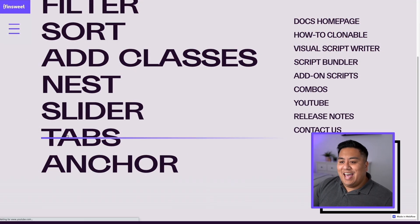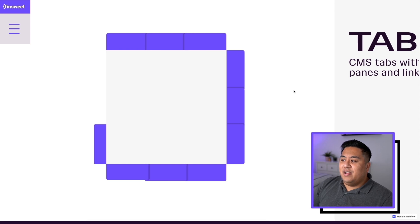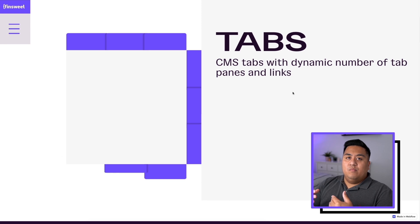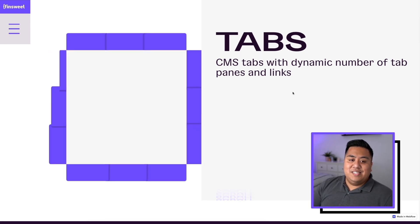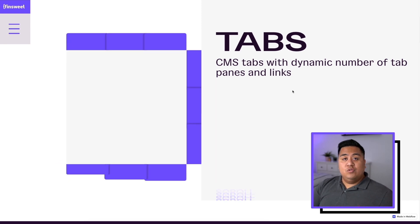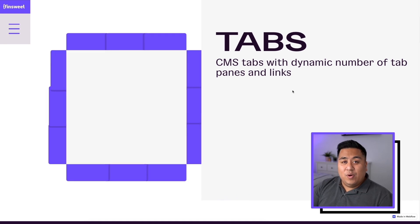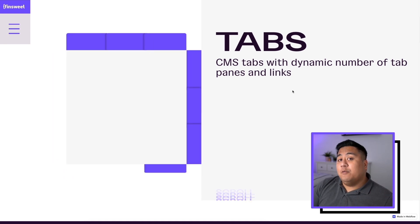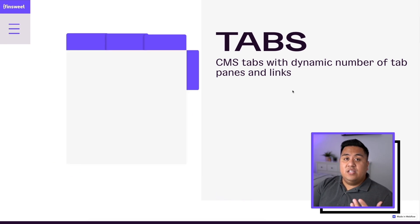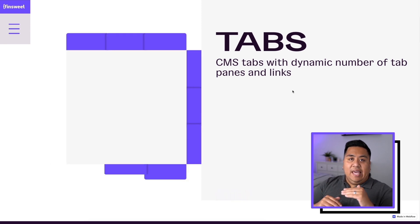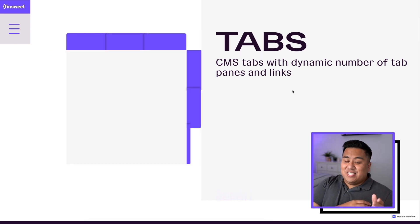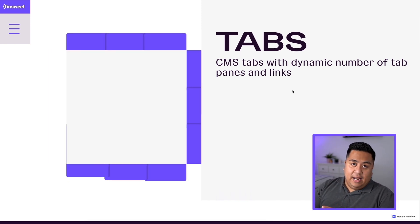The next tool is called Tabs, and it's very simple. You're able to create CMS tabs with your collection through the Tabs tool — your collections can be organized with tabs. This is useful for frequently asked questions or a help section on a website, where each tab is an actual collection item rather than just a standard static web design layout.